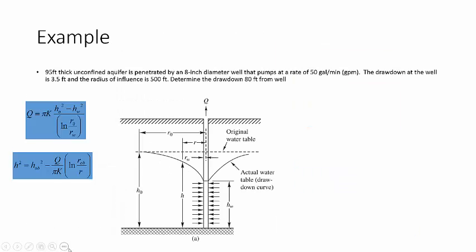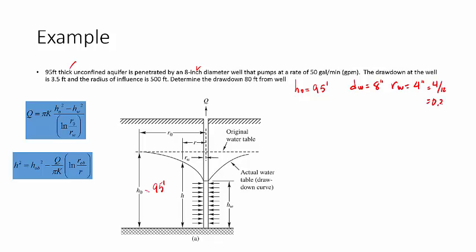This is the problem you solved or started to solve in the last class. Let's read each element to define which variables we have. It's a 95-foot thick unconfined aquifer, so H0 is 95 feet. It's penetrated by an 8-inch diameter well, so the diameter is 8 inches, meaning the radius of the well is 4 inches, which equals 4/12 or 0.33 feet.